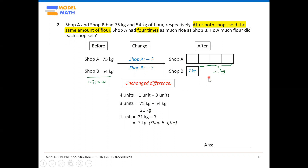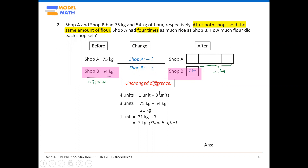Using Shop B: highlight Shop B's before and after values. Shop B had 54 kg before and, after selling some flour, is left with only 7 kg. So the amount sold is 54 minus 7, which equals 47 kg.